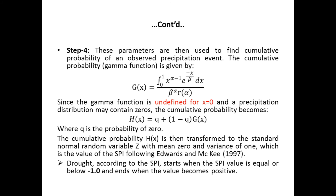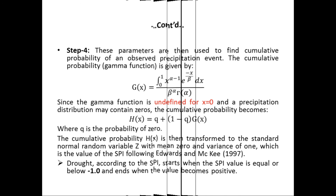According to the SPI framework, a drought starts when the SPI value reaches negative 1.0 or below, and ends when the value becomes positive again.